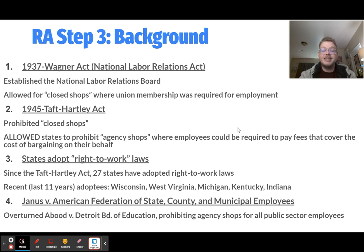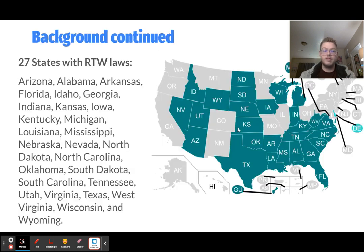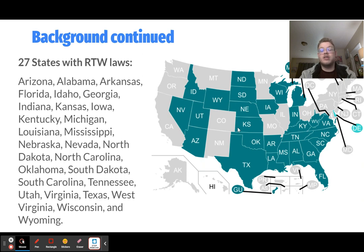In 23 states you can be required to pay dues for a union even if you're not part of it, but in 27 states you cannot. These 27 states are shown on a map — green states have right-to-work laws, gray states do not. Delaware technically has a city or district with right-to-work laws but it is not a statewide law. Missouri used to have a right-to-work law but overturned it. There are also other states not currently greened out that are considering measures to adopt right-to-work laws.